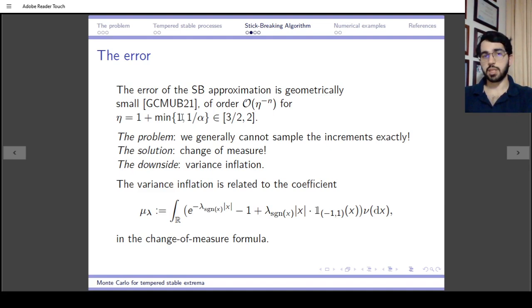The error is of order η^{-N}, for η explicitly given and lower bounded by 3/2. That means this does not get arbitrarily bad for some α. It could get much better and can get as good as 2^{-N}.